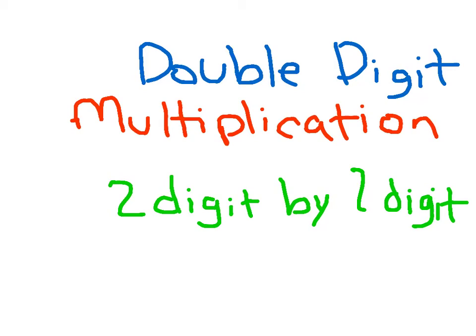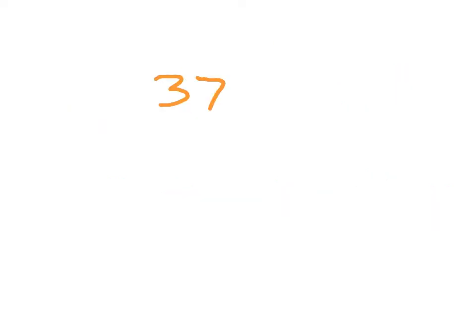Let's take a look at double-digit multiplication. We'll start by looking at multiplying two digits by two digits. Here is a two-digit number — we have a 3 and a 7. The 3 is worth 30 and the 7 is worth 7. Here is another two-digit number: we have the number 23.